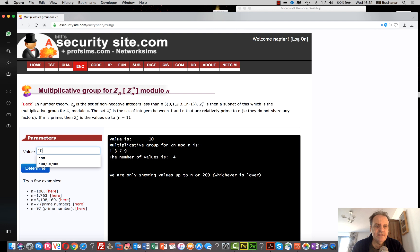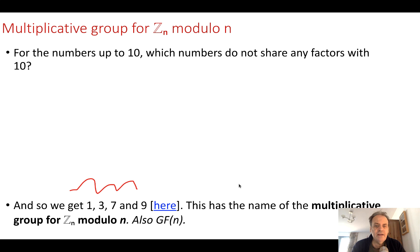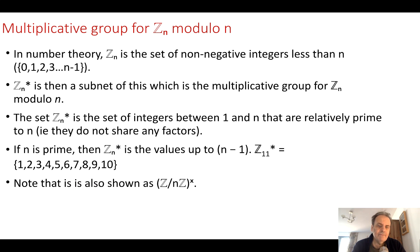For n equals 10, we get 1, 3, 7, and 9. If we take n equals 12, we get 1, 5, 7, and 11. This gives us our multiplicative group for Zn* modulo n. In number theory, Zn basically means we have 0 up to n minus 1 — we don't have a value greater than n.